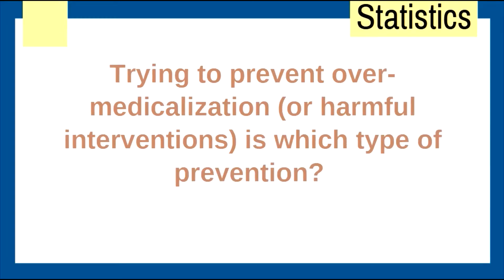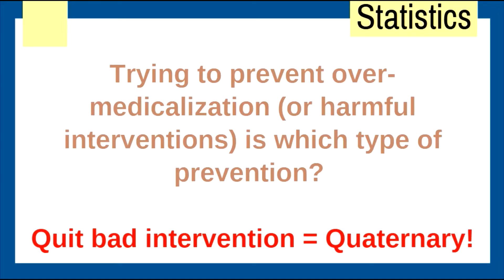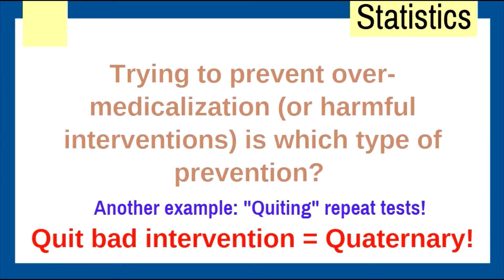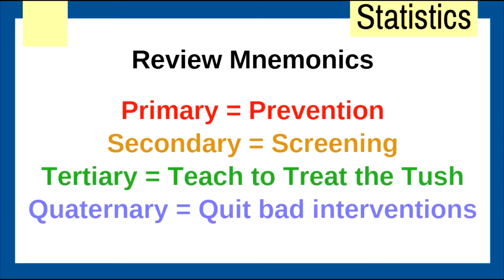Trying to prevent over-medicalization or harmful interventions — which type of prevention is that? Quaternary. Q for quit bad intervention, Q for quaternary. Another example: quitting repeat tests. Avoiding extra testing is quaternary prevention. To review: primary equals prevention, secondary equals screening, tertiary — teach to treat the tush, and quaternary — quit bad interventions.